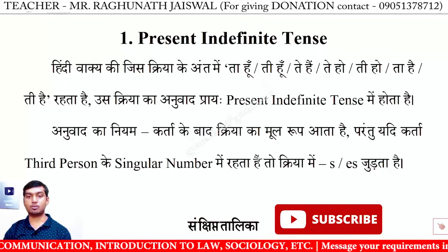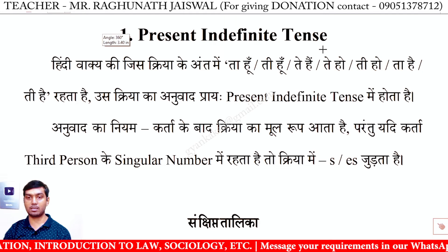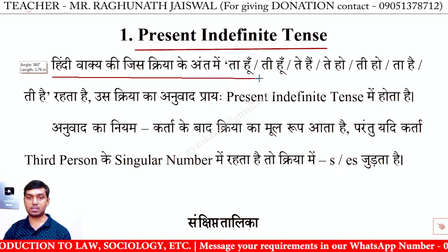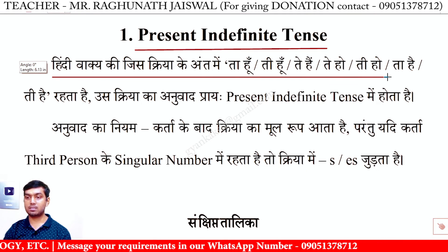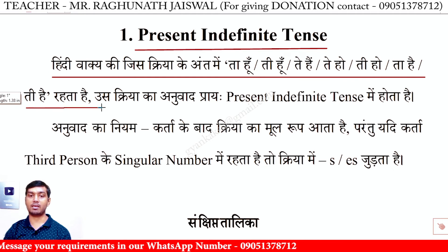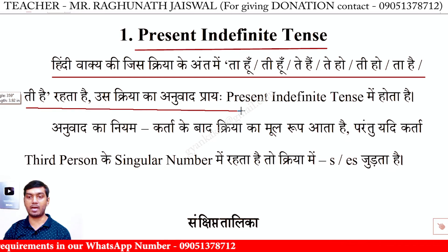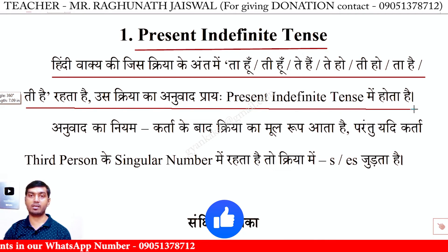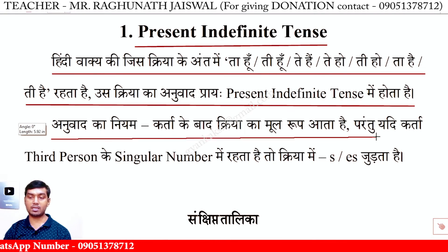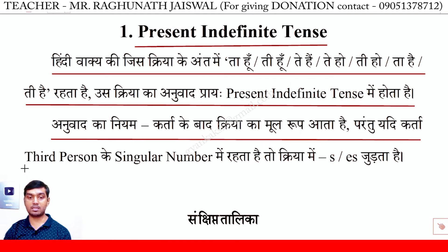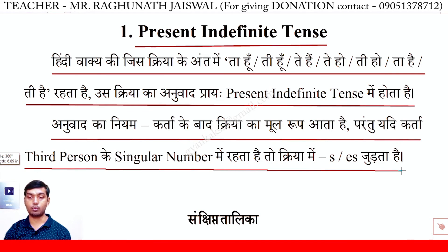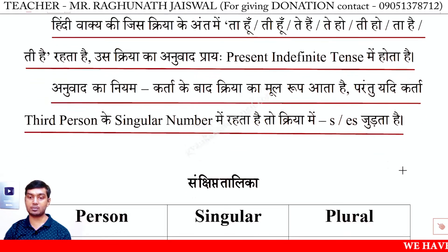अभी जो हम लोग examples किये वह Present Indefinite tense का था। हिंदी वाक्य की जिस क्रिया के अंत में ता हूं, ती हूं, ते हैं, तो हैं, ती हो, ता है, ती है रहता है — उस क्रिया का अनुवाद प्रायः Present Indefinite tense में होता है। अनुवाद का नियम: कर्ता के बाद क्रिया का मूल रूप आता है। परन्तु यदि कर्ता third person singular number में हो, तो क्रिया में S या ES जुड़ता है।